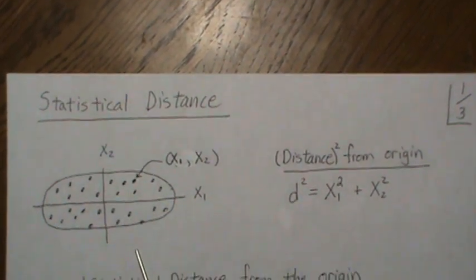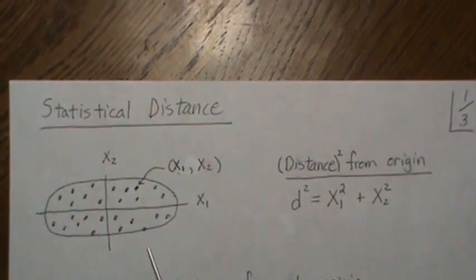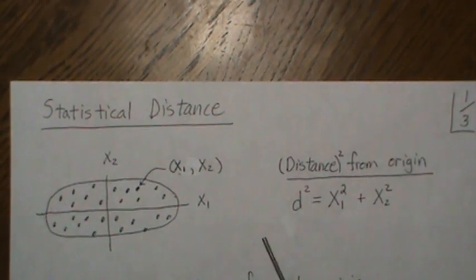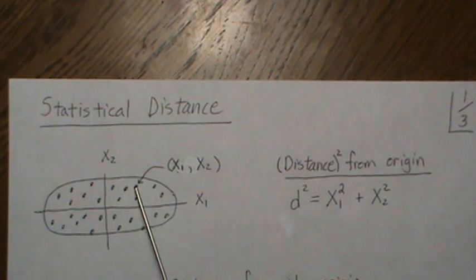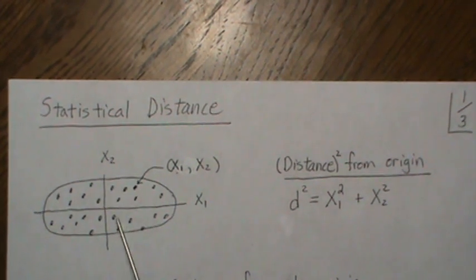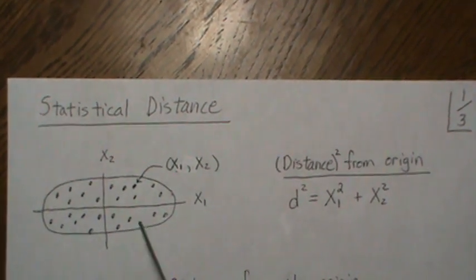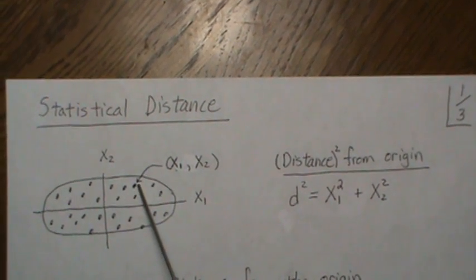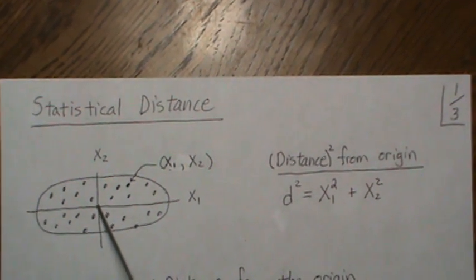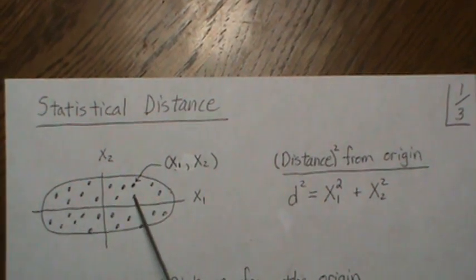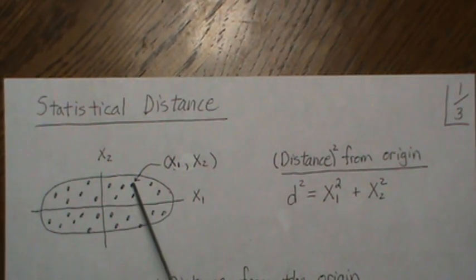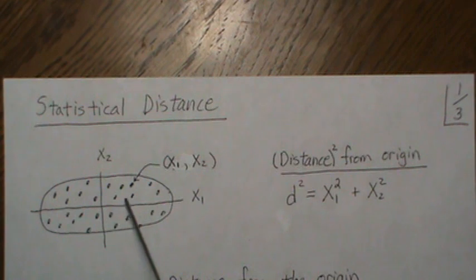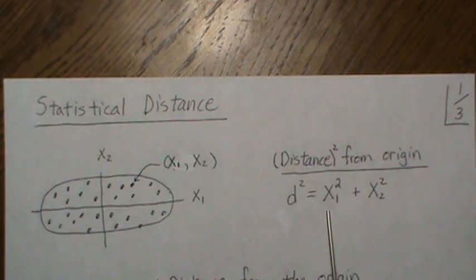So if we have a set of data points, and I drew an ellipse around it just so you can get a general shape of where the data lie in the X1 and X2 plane. If we're looking at the distance from the origin from this point here, we draw a little line from it, and we can create this right angle.